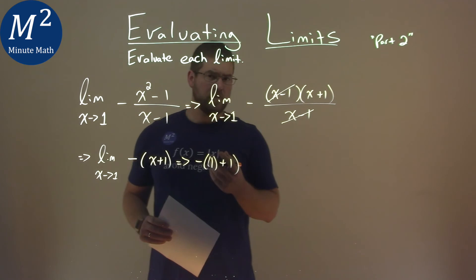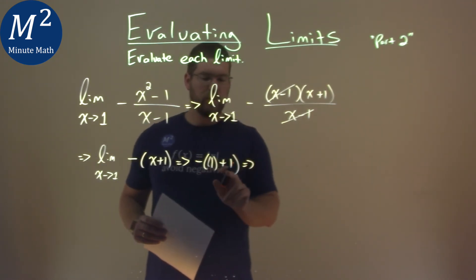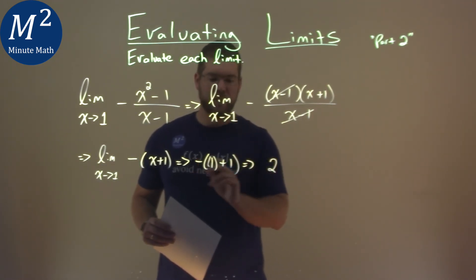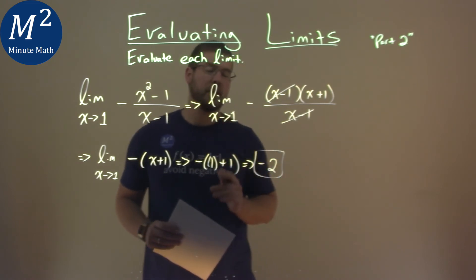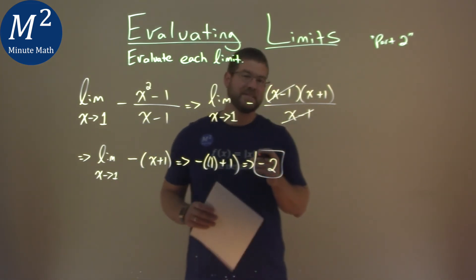And then we keep simplifying. 1 plus 1 is 2. Your negative is out front. And so our limit here and final answer is just negative 2.